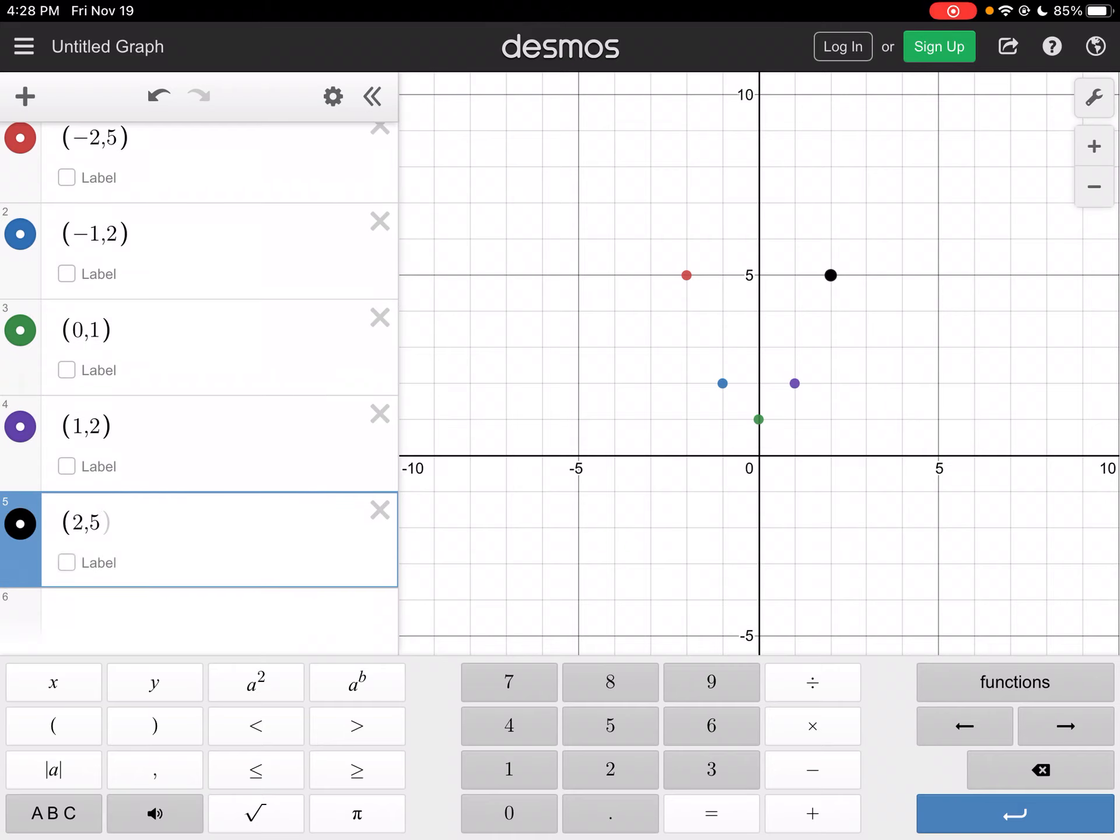And notice how we get a parabola here. Since we get a parabola, it's quadratic.